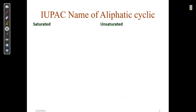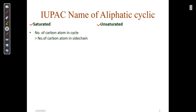The IUPAC name of aliphatic cyclic compounds is divided into two parts: one is saturated and another one is unsaturated. For a saturated compound, the key criterion is whether the number of carbon atoms in the cycle is greater than the number of carbon atoms in the side chain.